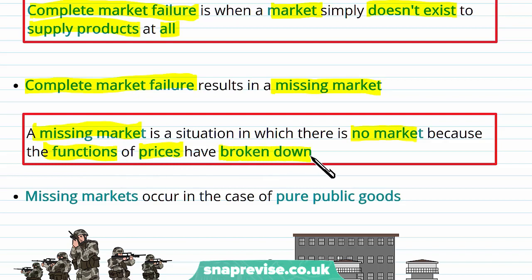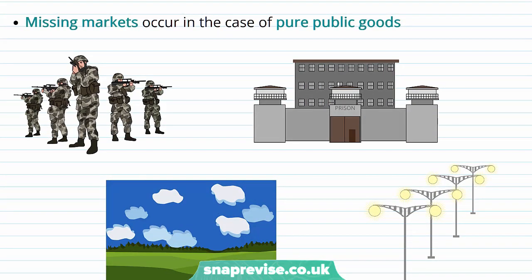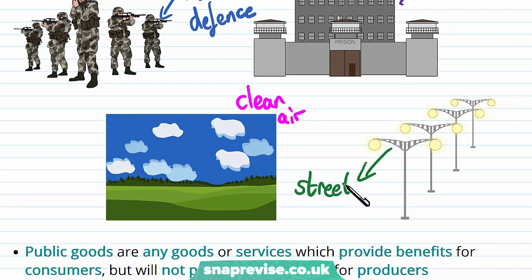Despite there being a demand for the good, it's not being conveyed through the price mechanism in a way that would cause firms to enter. Missing markets occur in the case of pure public goods — goods which are non-rivalrous and non-excludable. Some examples of pure public goods include national defense, prison systems, clean air, and street lighting.